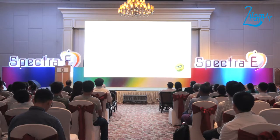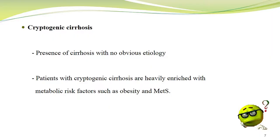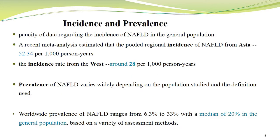Cryptogenic cirrhosis means the presence of cirrhosis without obvious etiology. Cases of cryptogenic cirrhosis are heavily enriched with metabolic risk factors such as obesity and metabolic syndrome. Regarding incidence and prevalence, there is positive data available, though incidence of NAFLD in general populations varies widely.